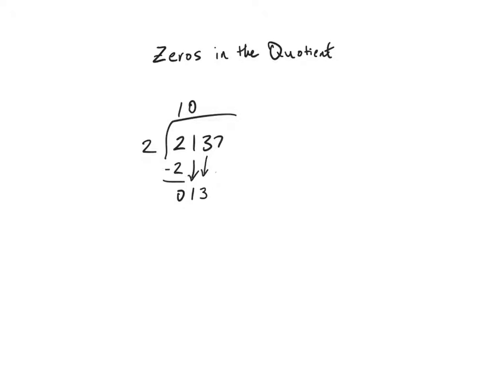2 goes into 13 six times, 1 left over, so I can regroup. And 2 goes into 17 eight times, with a remainder of 1. So my answer is 1,068 and 1 half. Again, every single digit in the dividend has a digit directly above it in the quotient.